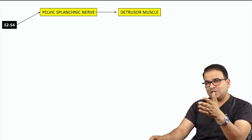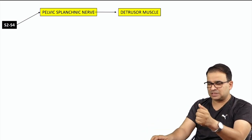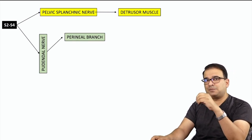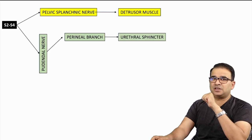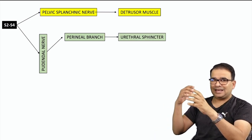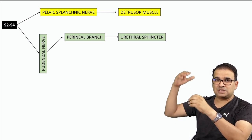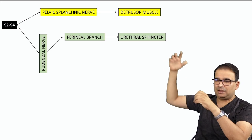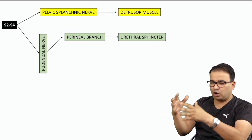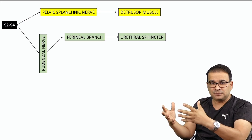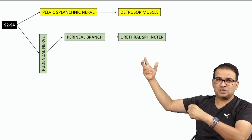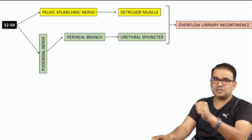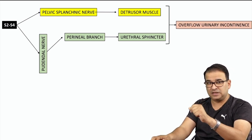S2, S3, S4 is also represented in the pudendal nerve, which supplies erectile structures. One branch of the pudendal nerve — the perineal branch — supplies the sphincter urethrae. So if S2, S3, S4 segments are involved, the detrusor muscle and urethral sphincter are not working. Detrusor muscle inability prevents urine from flowing out, causing urinary retention, while urethral sphincter atonicity leads to overflow urinary incontinence.